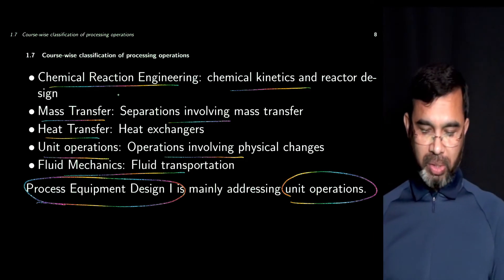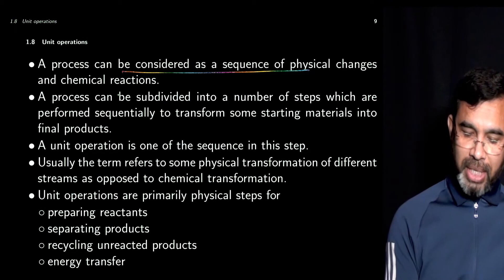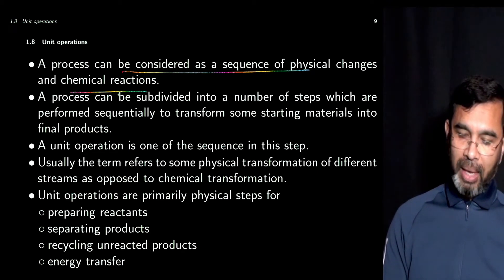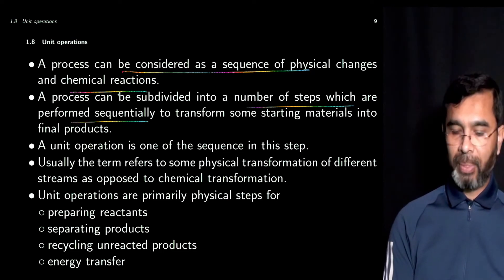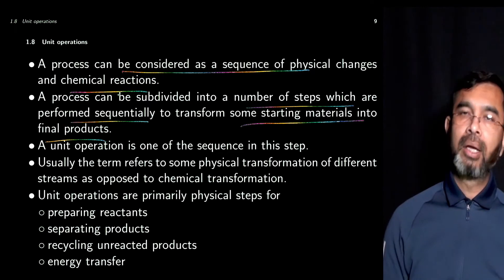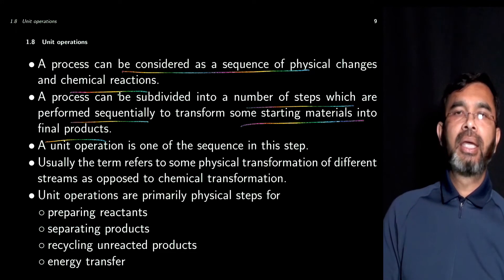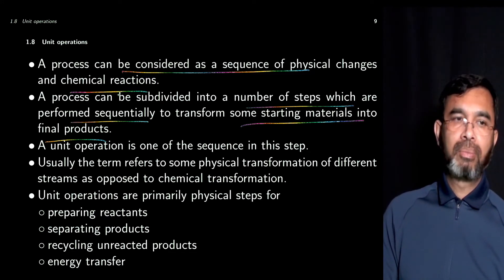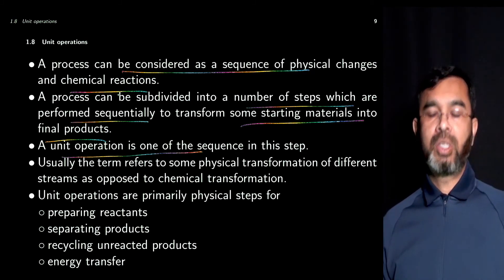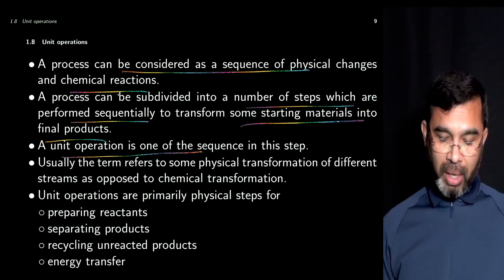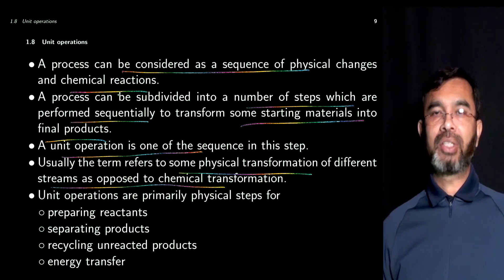This process equipment design course mainly addresses unit operations. A process can be considered as a sequence of physical changes and chemical reactions, subdivided into steps performed sequentially to transform starting materials into final products. A unit operation is one step in this sequence — it refers to a physical transformation of different streams, as opposed to chemical transformations.